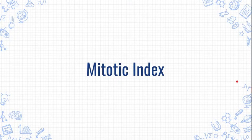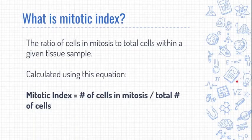The first thing to talk about is a mitotic index. That's just the ratio of cells in mitosis to the total number of cells within a given tissue sample. The equation is the number of cells in mitosis divided by the total number of cells.